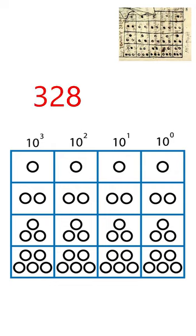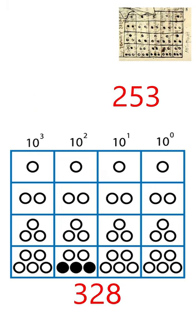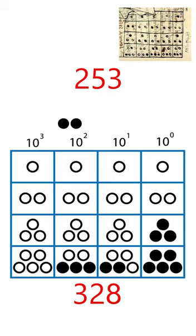To solve the addition 328 plus 253, first we place the number 328 on the Yupana, next we put the number 253 on top. To add them, we place the black dots on top to their corresponding column.